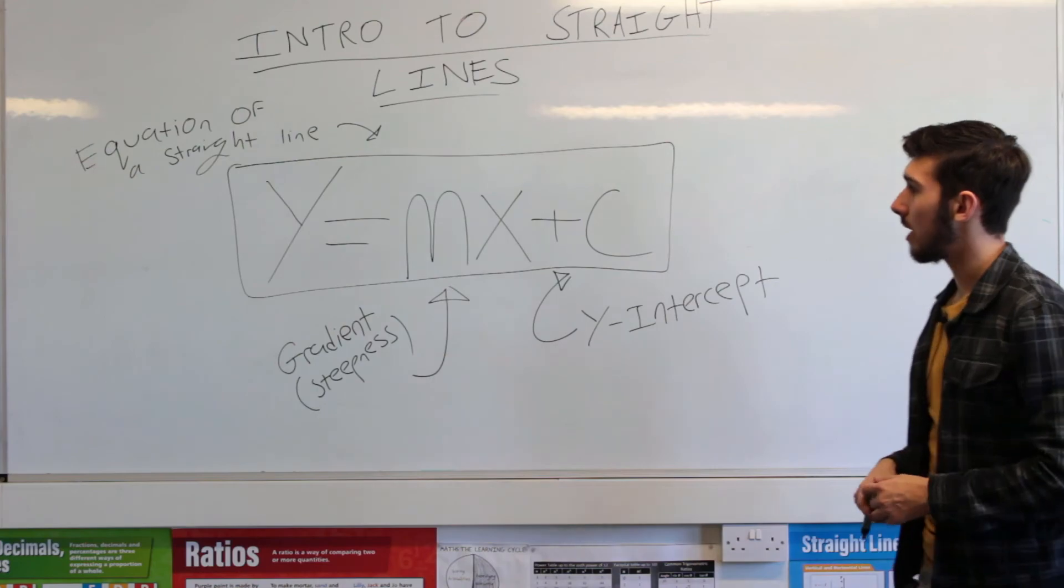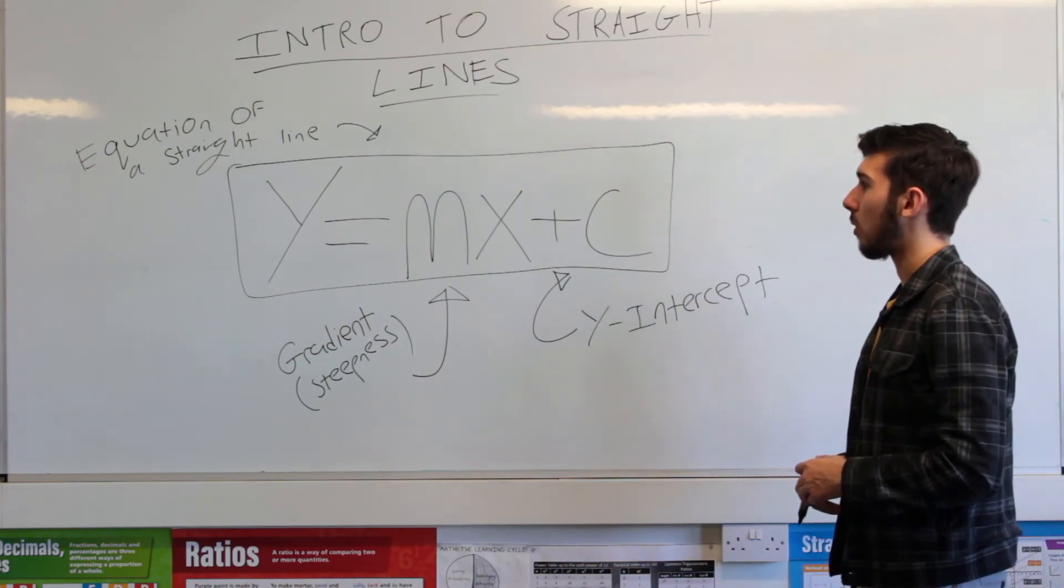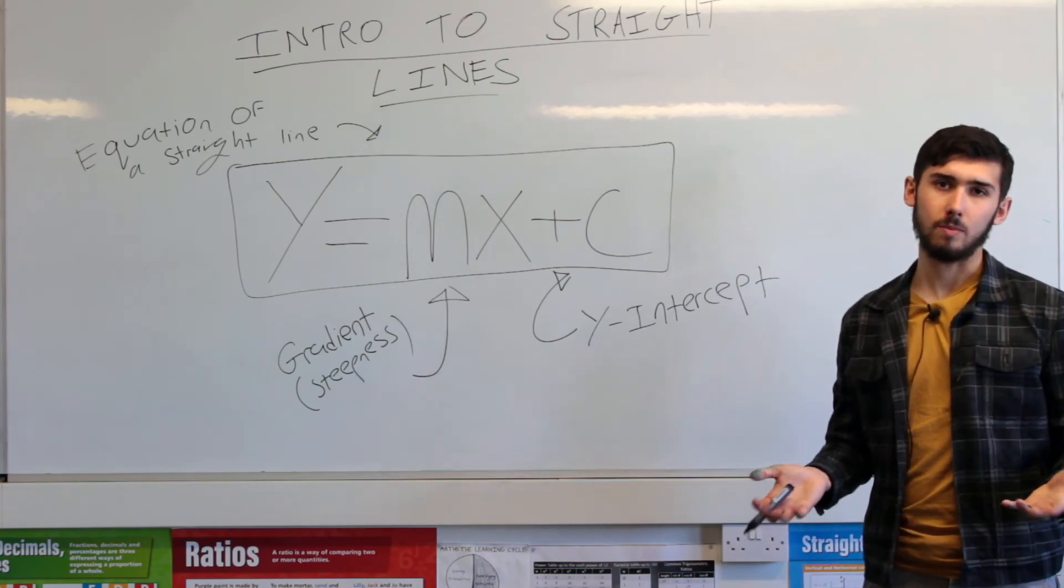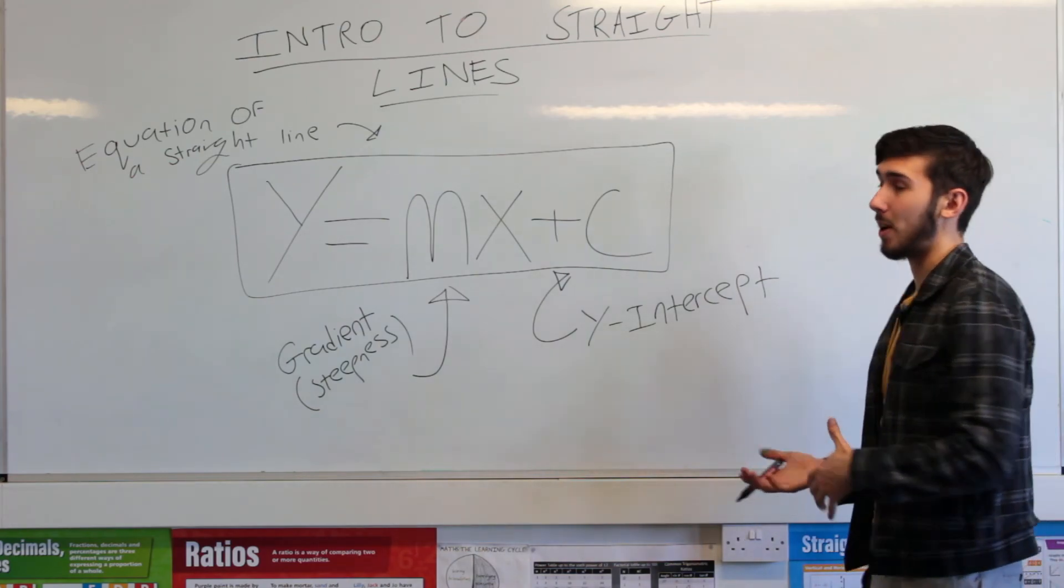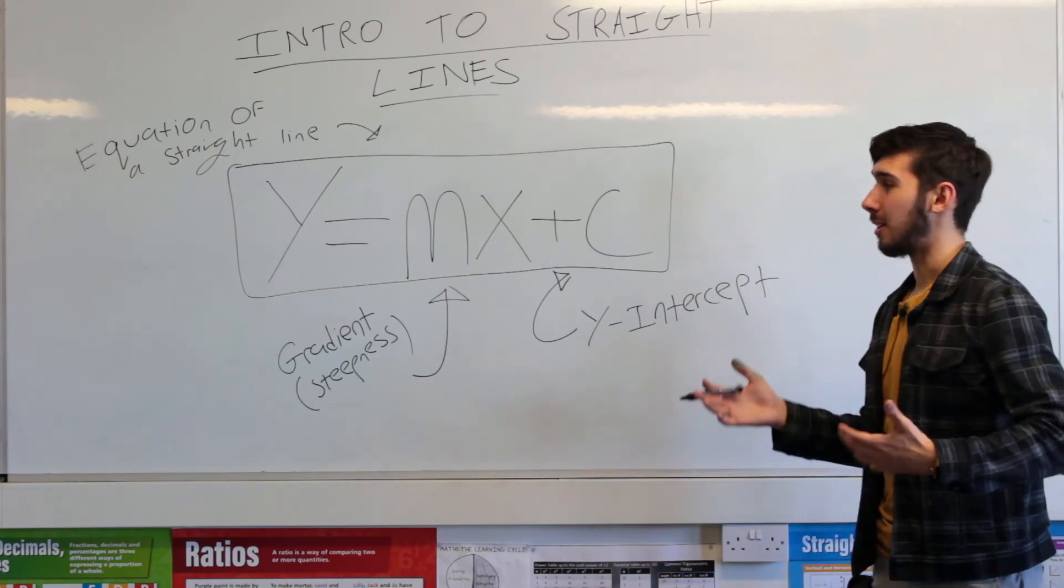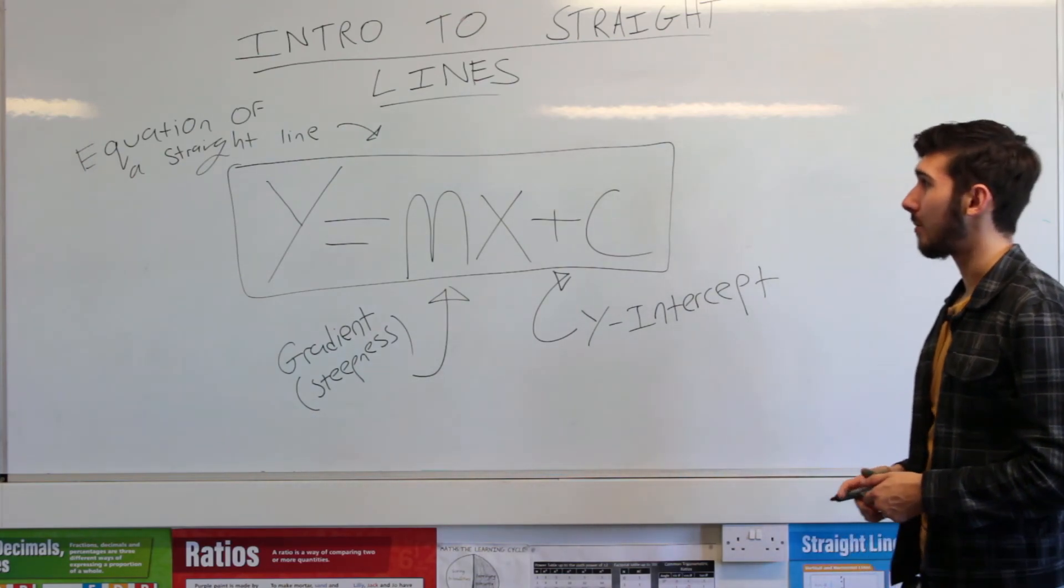Or I should say it this way: if you put in a value for x and y and they don't link up, it's not on the line. If you put in a value of x and y and they do link up, it does make the equation true, then they are on the line.